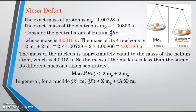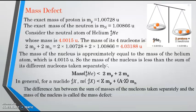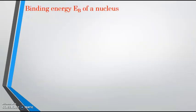The difference delta M between the sum of the masses of the nucleons taken separately and the mass of the nucleus is called the mass defect. Delta M is the mass defect, which is equal to Z multiplied by mass of protons plus A minus Z, which represent the number of neutrons, multiplied by mass of neutrons minus MX.